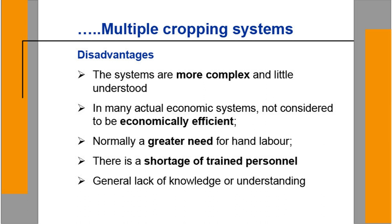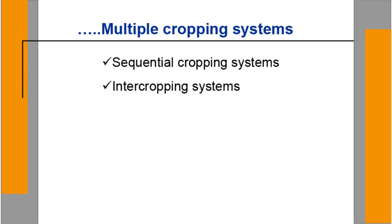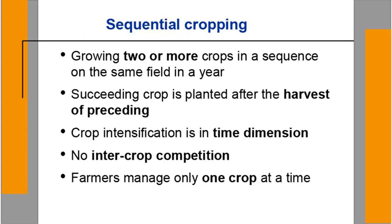Monoculture has happened mainly in areas where only one crop is possible — so that is by nature, not by choice. Multiple cropping can be divided into two types: sequential cropping and intercropping. Sequential cropping means growing two or more crops in sequence on the same field in a year, where the succeeding crop is planted after harvest of the preceding crop. Crop intensification is in the time dimension. There is no inter-crop competition since at any one point only one crop is growing, and farmers manage only one crop at a time.